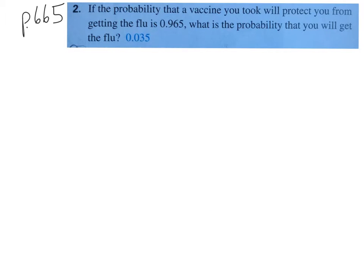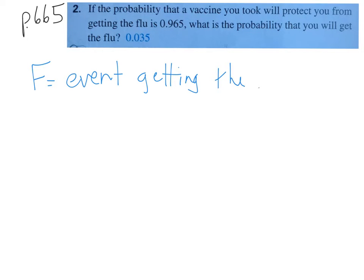Here's a basic example from page 665, number 2. The probability that a vaccine you took will protect you from getting the flu is 0.965. What is the probability that you will get the flu? Let's define events: let F be the event of getting the flu. That means F-prime, or F complement, would be the event of not getting the flu.